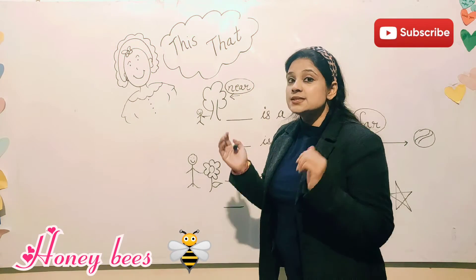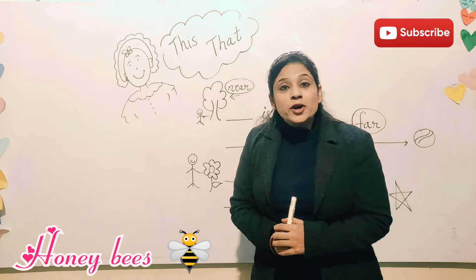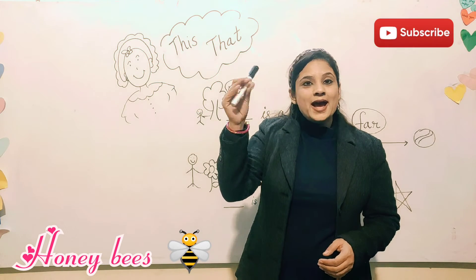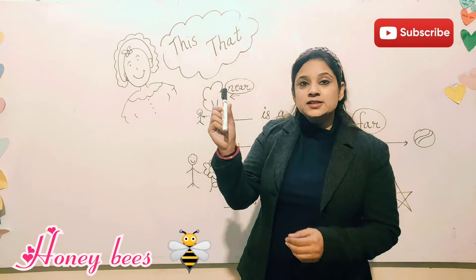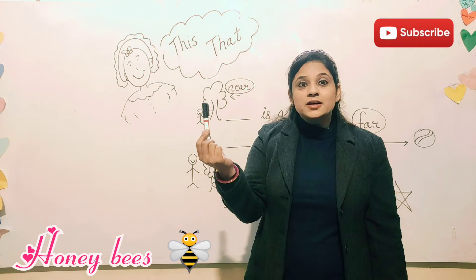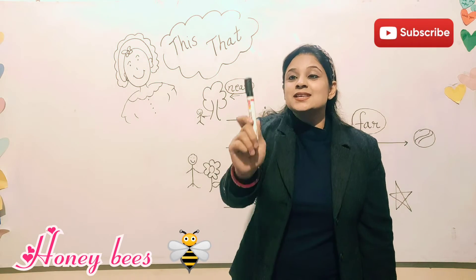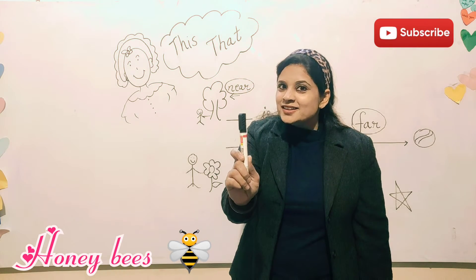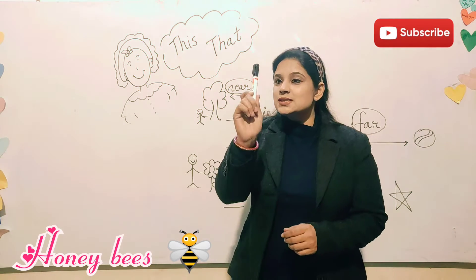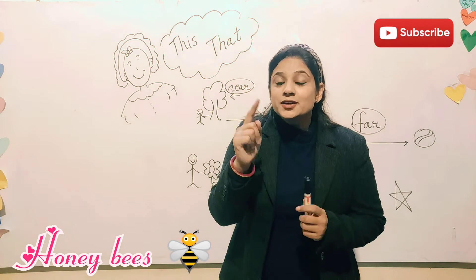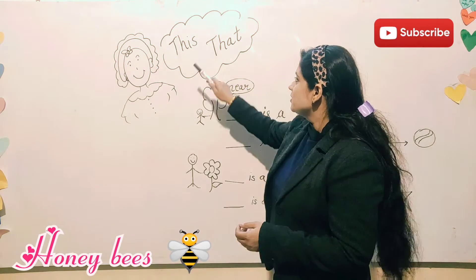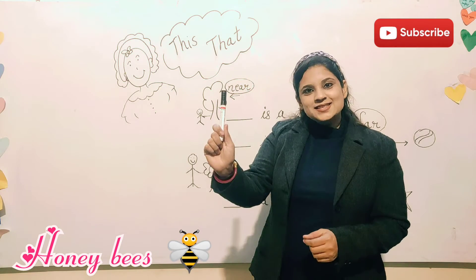This — 'this' is something which is used for things which are near to us and we can touch them. So can you see a marker in my hand? This is a marker, right? I can touch this, and this is very near to me. So what I will use for this marker? I will say, 'This is a marker.' And why have I used 'this'? Because there is only one marker — one thing. That's why we have used 'this'. This is a marker.